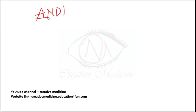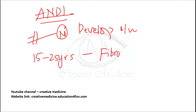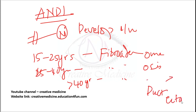ANDI (Aberrations in Normal Development and Involution): at 15 to 25 years of age, fibroadenoma is most common. At 25 to 40 years of age, fibroadenosis is most common. At more than 40 years of age, fibroadenosis and duct ectasia are most common.